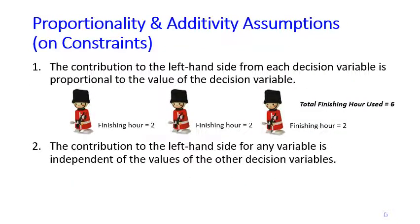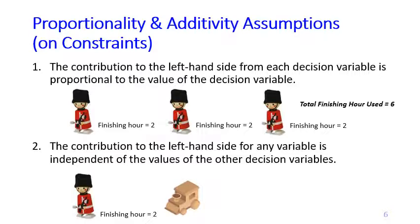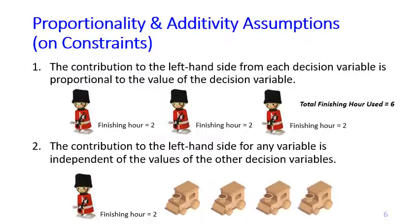The proportionality and additivity assumptions also apply to constraints. For example, if you use two finishing hours for one soldier, then if you produce three soldiers, proportionally you will use six finishing hours. And the additivity assumption says the finishing hours for one soldier do not depend on how many trains you produce — whether one, two, three, or four trains — so you can add the total finishing hours for soldiers and trains independently.